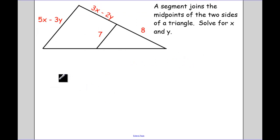This segment joins the midpoints of two sides of a triangle. So this segment is equal to that segment. This segment here is equal to that segment there. Solve for X and Y. Well, I know since this mid-segment here joins the segment, the midpoints. I knew 3X minus 2Y is going to equal 8.